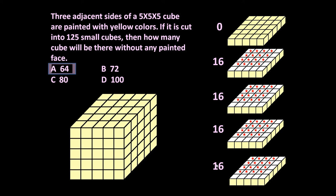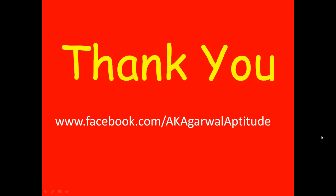So the answer is 64. There will be 16 + 16 + 16 + 16 = 64 unit cubes produced out of 125 which don't have any face painted. Friends, thank you very much for watching this video. You can also follow me on Facebook. Thank you very much.